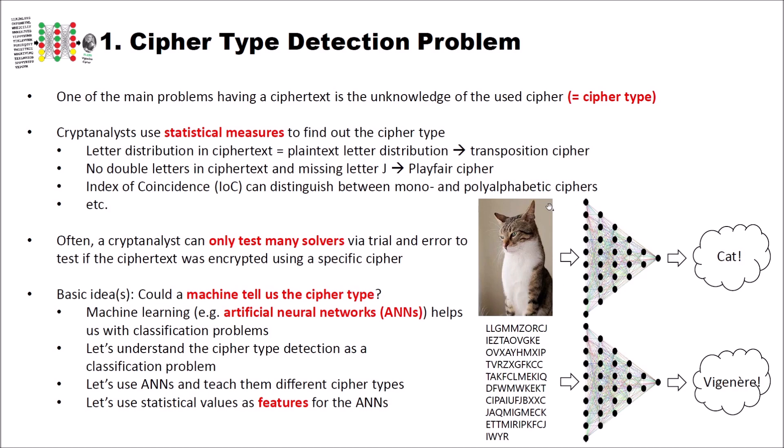We will use statistical values as so-called features for the artificial neural networks. That means instead of giving an image to the neural network, we give a ciphertext to it. The neural network processes it and in the end tells us, for instance, that this ciphertext was encrypted using the Vigenère cipher. But first, let's look at the basics of artificial neural networks and feed-forward networks to understand how they work.